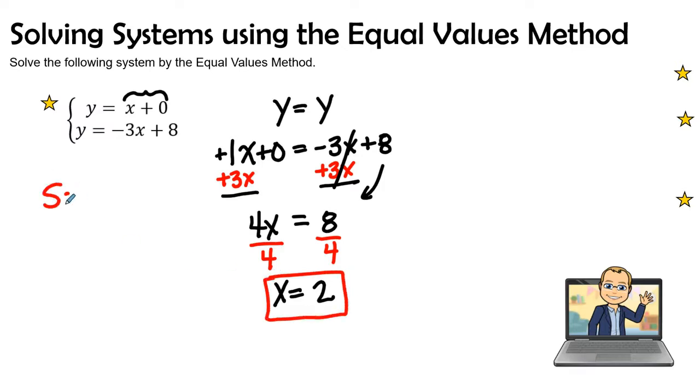And in our solution, our final answer, we know it has to be an ordered pair. And so we can say that the x value is 2. Let's go ahead and find out what our y value is. I can plug this 2 into the first equation and 2 plus 0 is 2. So we know that y is going to equal 2.